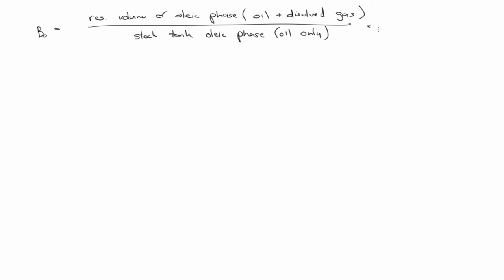That's because when you have the oleic phase in the reservoir under pressure, if it's below the bubble point, you'll have dissolved gas in the oil. But as soon as you begin to produce the reservoir and the pressure drops below the bubble point, then you're going to have gas coming out of solution. And when you take it to the surface, all the gas is going to come out of solution, so by the time you get to the surface, you're just going to have oil in your oleic phase.